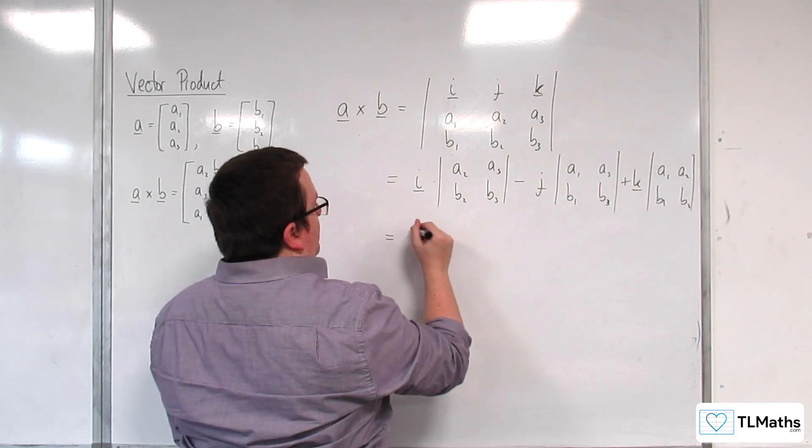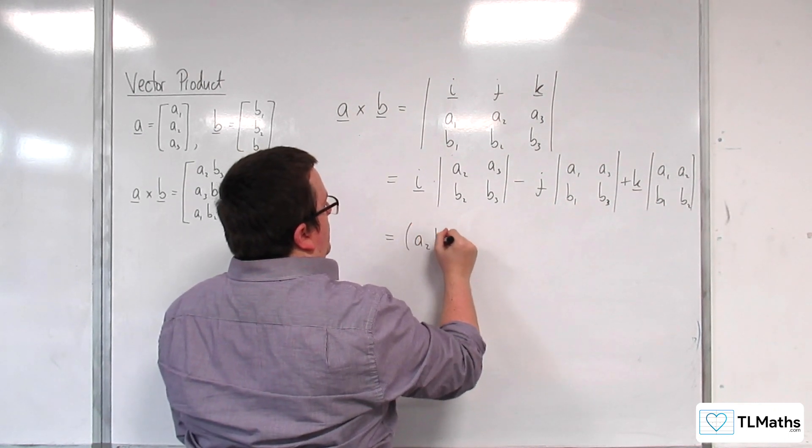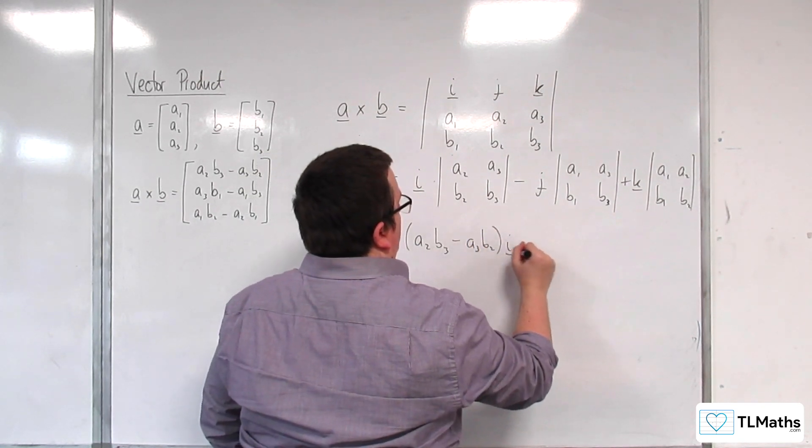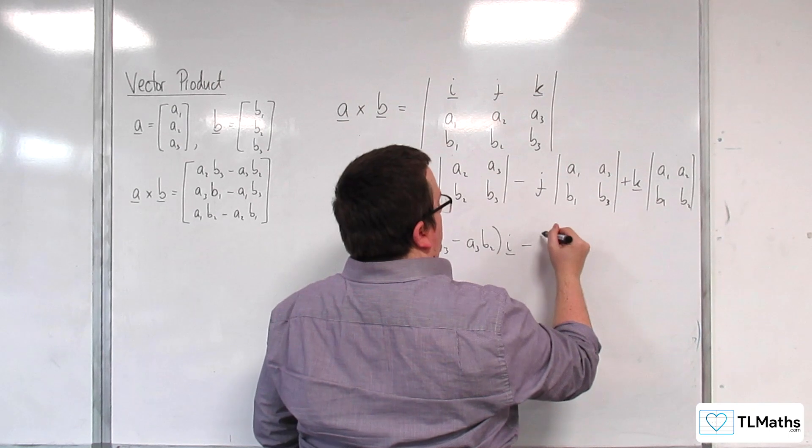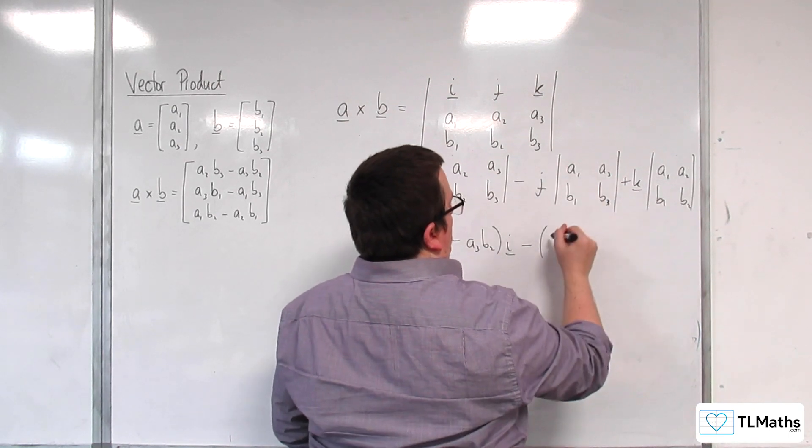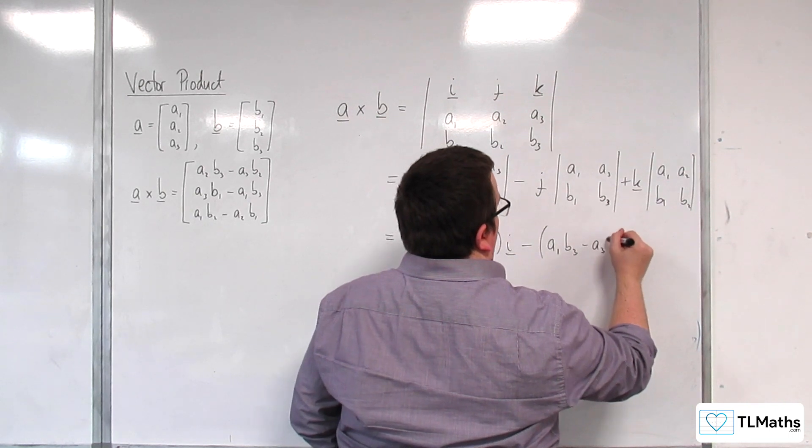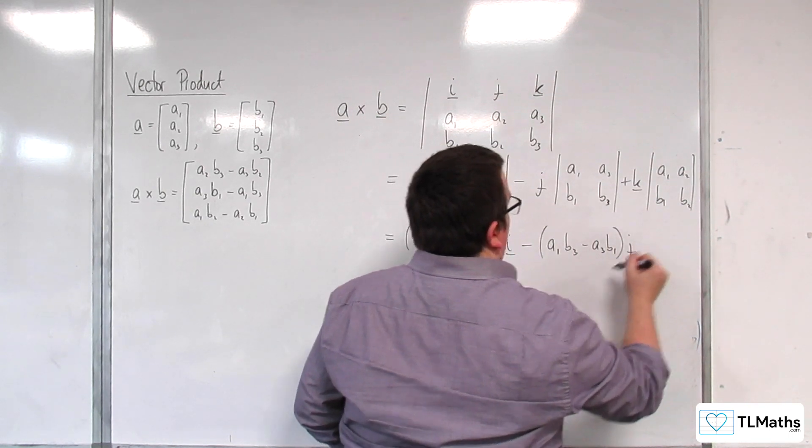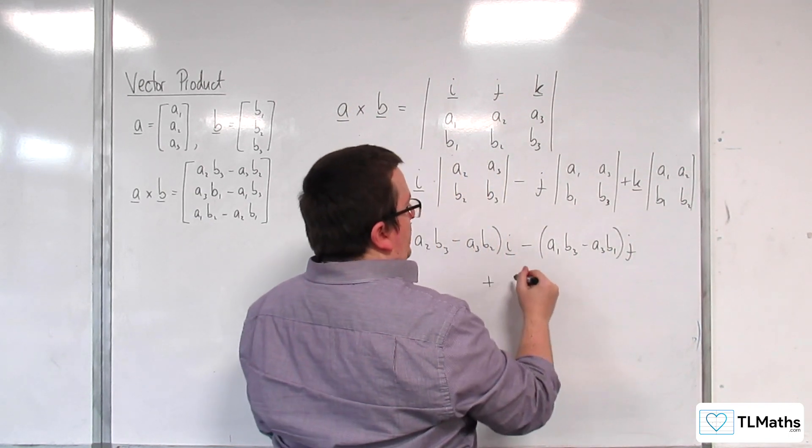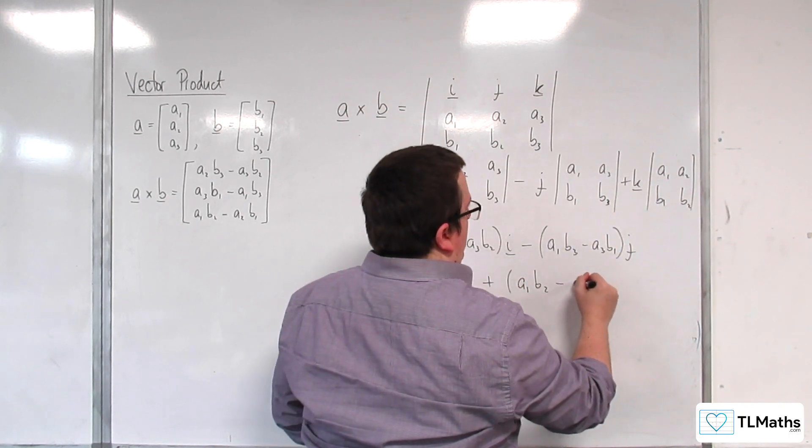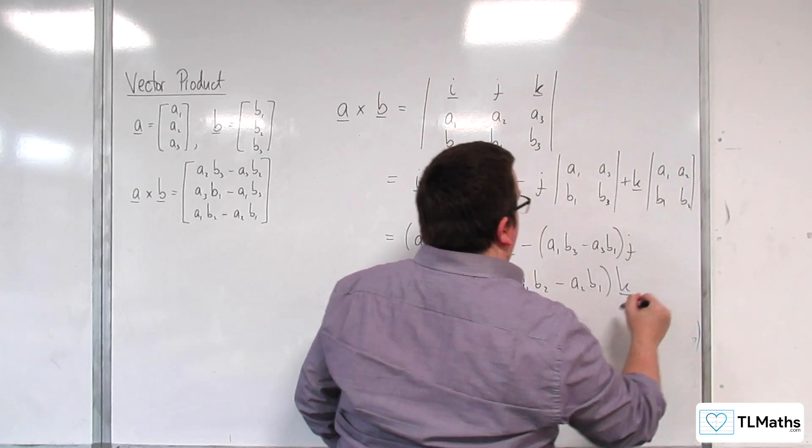So, we have A2, B3, take away A3, B2, I, take away J times this. So, A1, B3, take away A3, B1, J, plus we've got A1, B2, take away A2, B1, K.